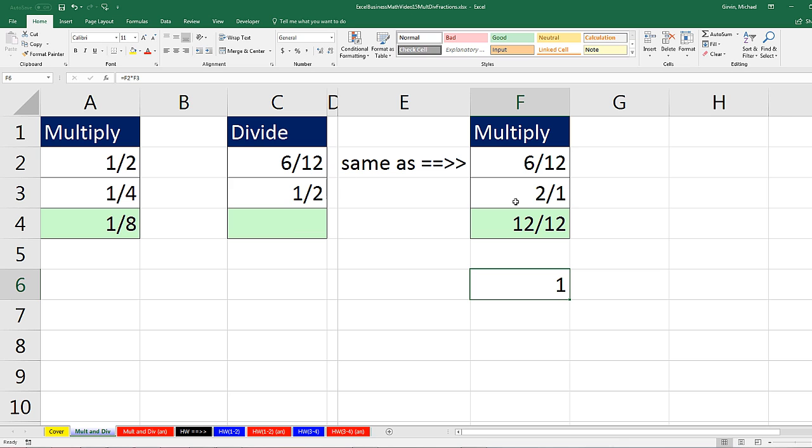In Excel, though, we don't have to flip the second fraction and then multiply, we can simply do our division. There's the first one divided by the second one. And as long as we make sure that the number is displayed as a reduced fraction, we're good to go.